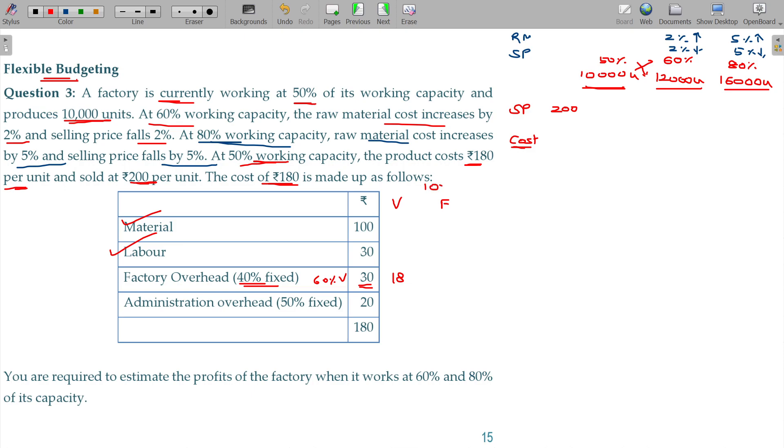10,000 units, the fixed cost variable. Administration overhead is 50% fixed, so 10 rupees. 10,000 units is 100,000. Variable cost is 10 rupees. So we got the value here.